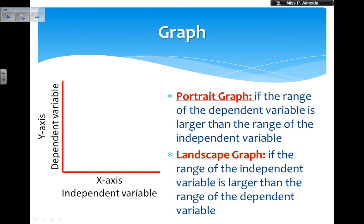When you draw a graph, think in advance whether it should be portrait or landscape. The independent variable should always go on the x-axis (horizontal) and the dependent variable on the y-axis (vertical). You should use a portrait graph if the range of the dependent variable is larger than the range of the independent variable — giving you more space for that scale. Use a landscape graph if the range of the independent variable is larger than the range of the dependent variable.